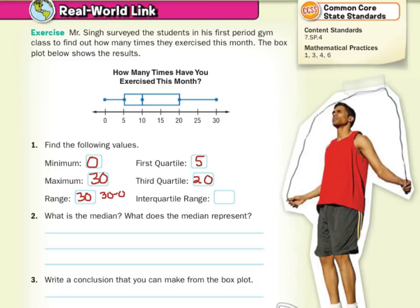For interquartile range, it's the distance between the first and third quartiles. So it's 20 minus 5, which is 15.